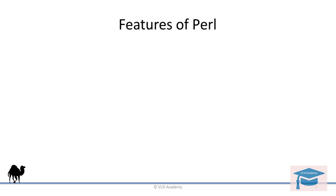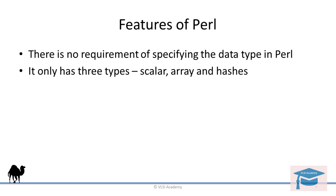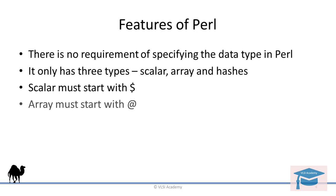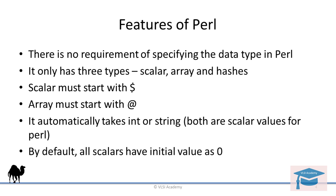There are some important features of Perl which you must know. For example, there is no requirement to specify the data type in Perl, and it has only three types: scalar, array, and hashes. There are some syntax constraints you must know — scalar must start with a dollar sign and array must start with at sign. It automatically determines whether a value is int or string; both are scalar values in Perl. By default, all scalar values have an initial value of zero.